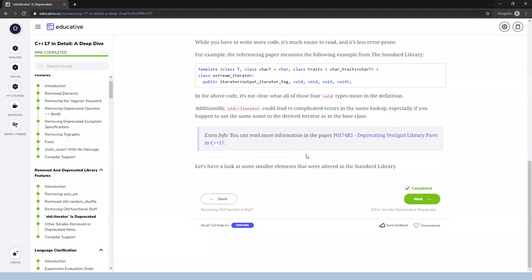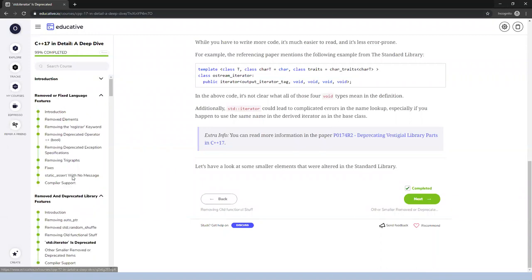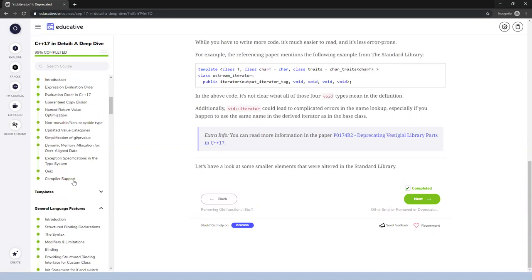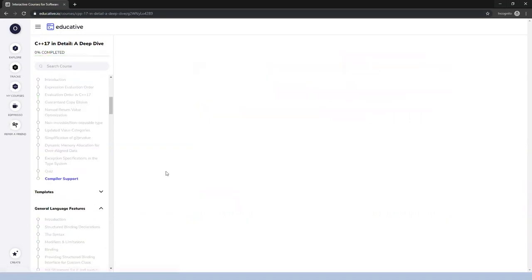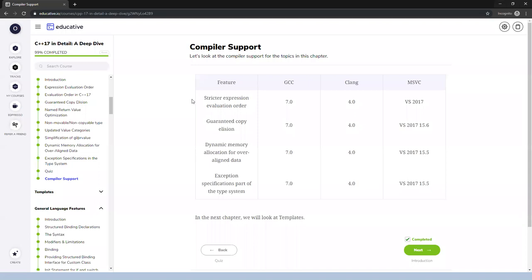Also, each topic has good instruction on new features, explaining how to use them and comparing with previous standards. It has good examples, and at the end of chapters, there's compiler support information where you can check which compilers support features - GCC, Clang, and Microsoft Visual Studio.